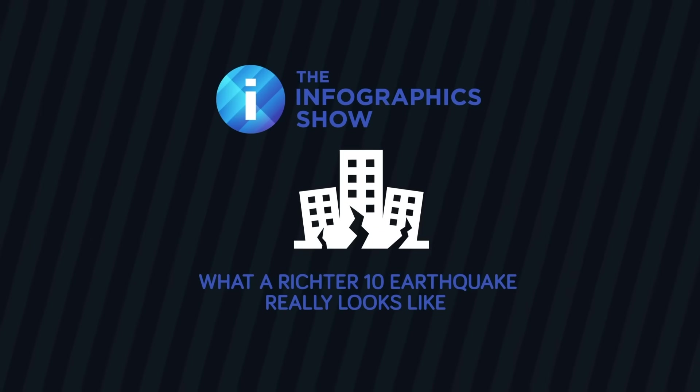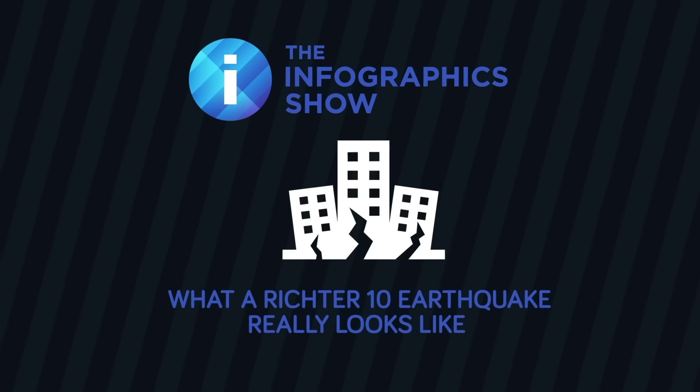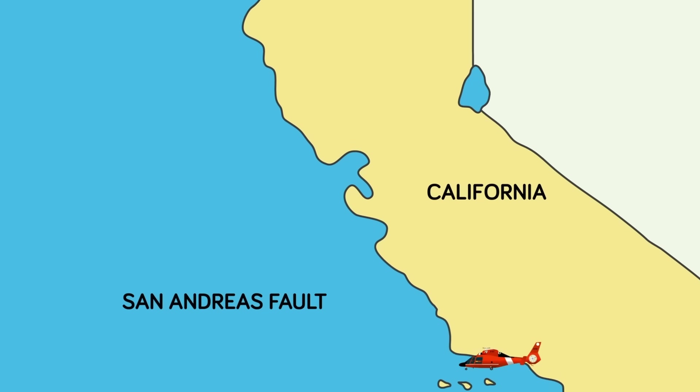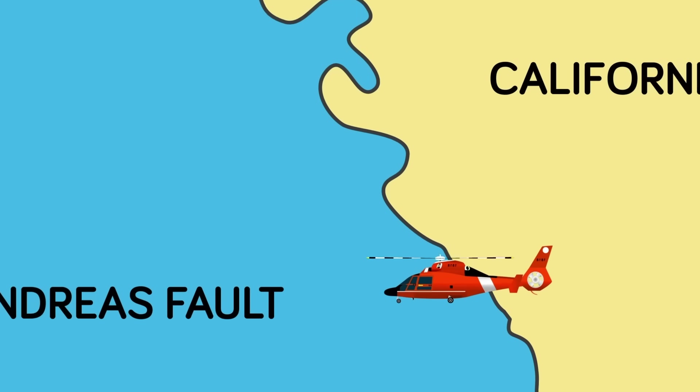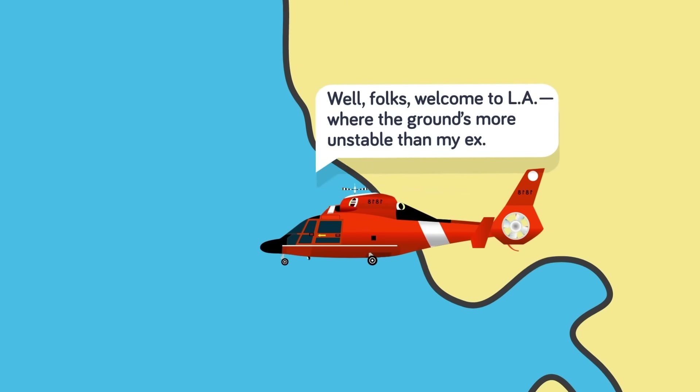Welcome to today's episode of the Infographics Show, we'll show you what a Richter 10 earthquake really looks like. If you've ever been in California, you've probably heard conversations about the big one. That one huge earthquake that's going to wipe us all out, thanks to the San Andreas Fault.